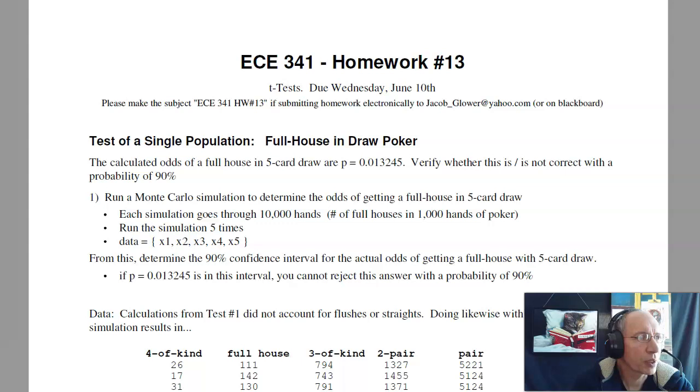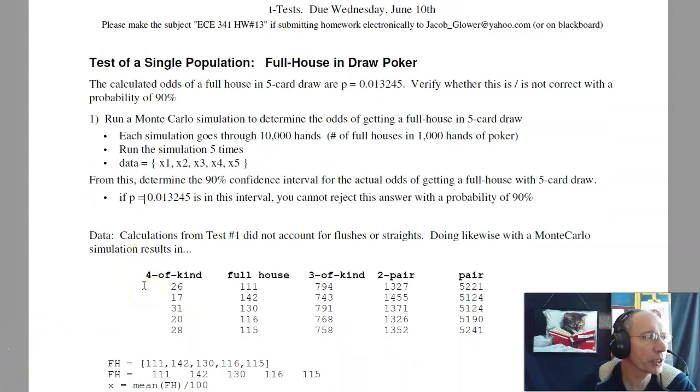This is the solution to Homework Set number 13 for ECE 341, Random Processes. The first problem is we're taking a program that we wrote earlier, one for 5-card draw in poker, and from that trying to determine what the probability of getting a full house is. The previous calculation showed that the probability should be 1.3%. We want to see if that's consistent with the Monte Carlo simulation.